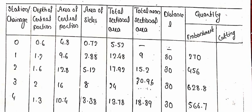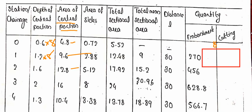The area of the central portion is calculated as depth × breadth. The breadth is 8 meters. So: 0.6 × 8 = 4.8; 1.2 × 8 = 9.6; 1.6 × 8 = 12.8; 2.0 × 8 = 16.0; 1.3 × 8 = 10.4 square meters. These are the rectangular central portion areas.